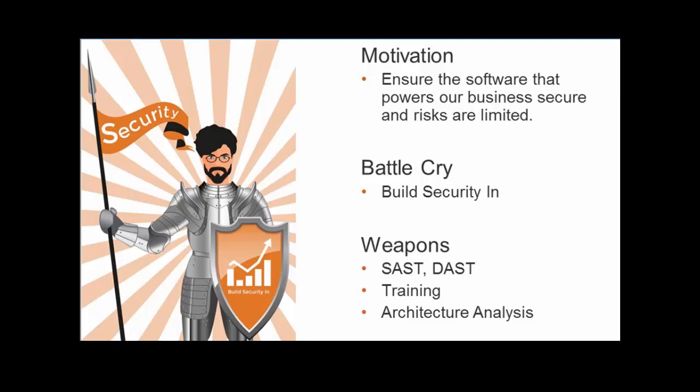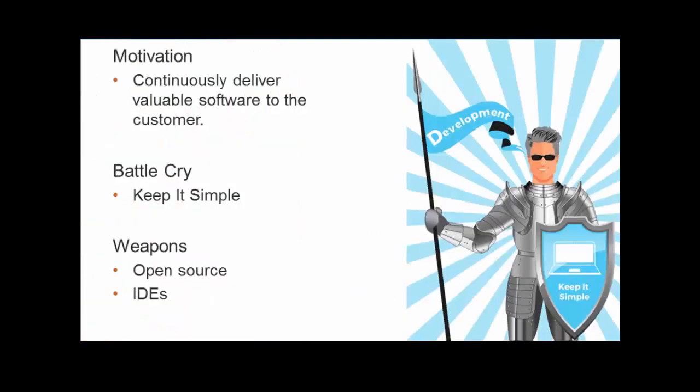From a weapons perspective, there are multiple techniques we can use to identify security risk — things like static analysis, code review, dynamic analysis and pen testing, training, architecture analysis, and so on. That's what I'll be talking about today.